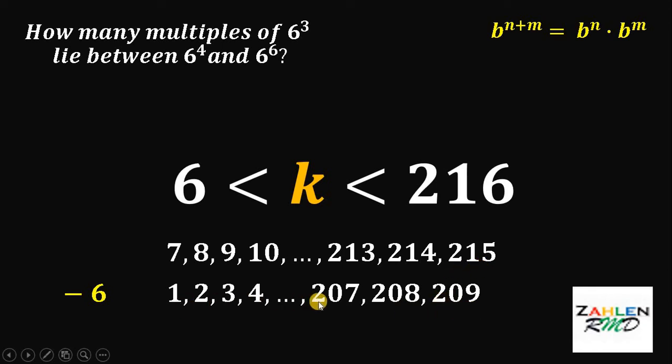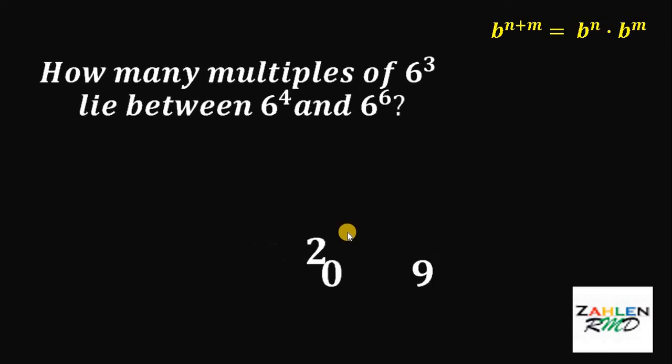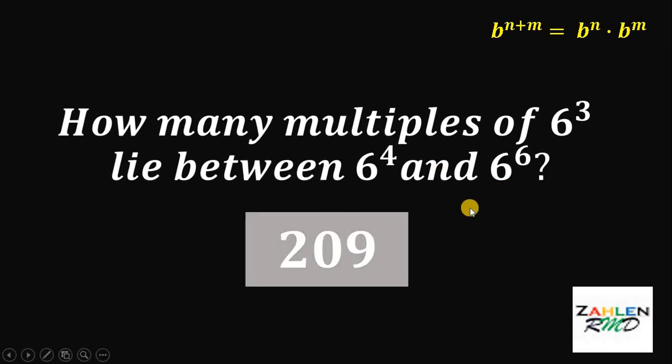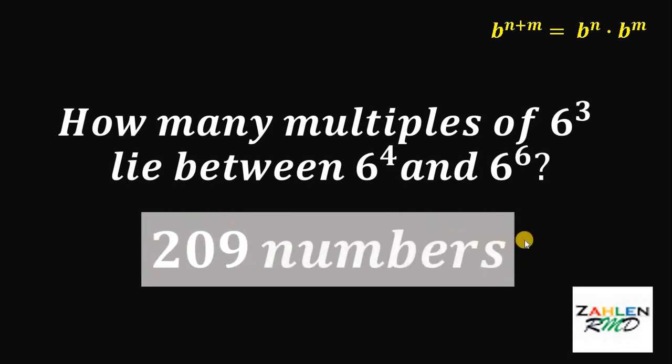Therefore, there are 1, 2, 3, 4, 5, 6 up to 209 numbers. We have 209 possible values for k. It directly follows that there are 209 numbers that is multiple of 6 cube between 6 raised to the 4th power and 6 raised to the 6th power.